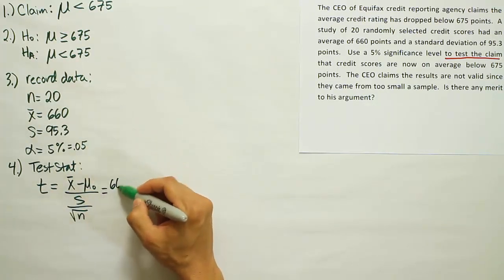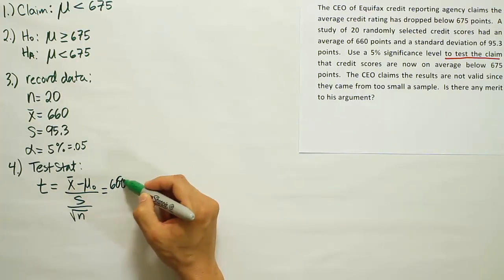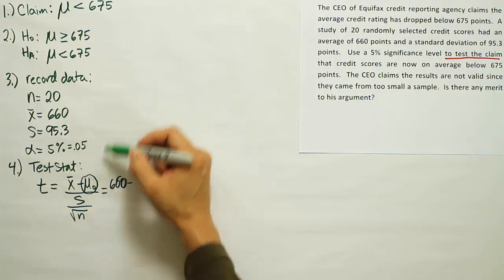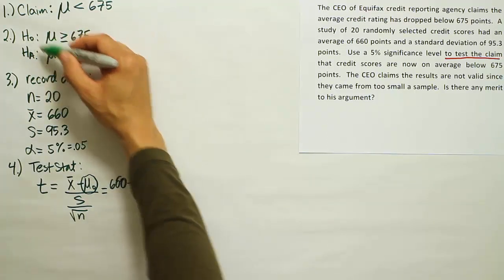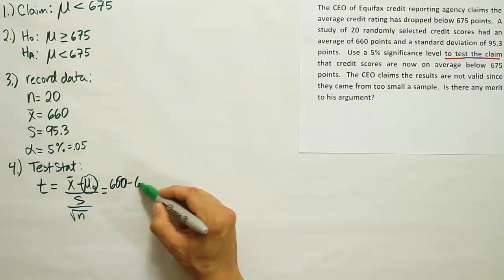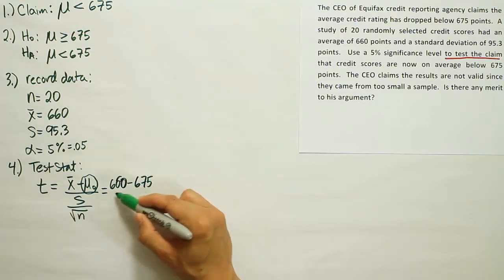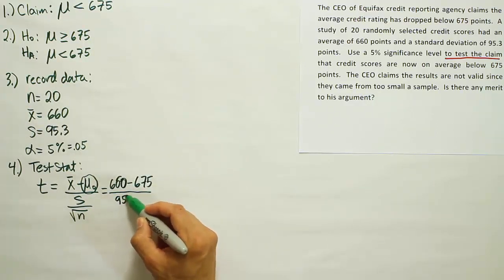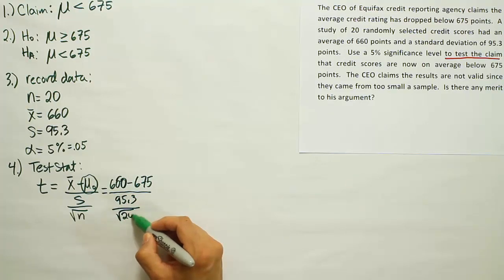So X bar is 660. Then we subtract off this value, mu sub zero. That value comes from H0. Remember that notation lines up. So it tells us to use the number we find there. That's 675. Then divide by S, S is 95.3, and then divide by the square root of N, which is the square root of 20.